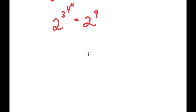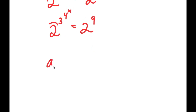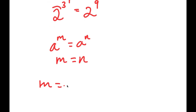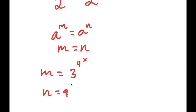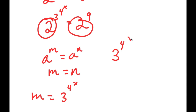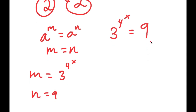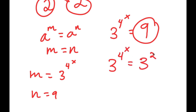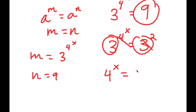Now, if I have something in the form a to the power of m is equal to a to the power of n, this means that m is equal to n. So here m is equal to 3 to the power of 4 to the power of x, and n is equal to 9. Because these two bases are the same, this means that 3 to the power of 4 to the power of x is equal to 9. Now, 9 is the same thing as 3 squared. So now I have 3 to the power of 4 to the power of x is equal to 3 squared.